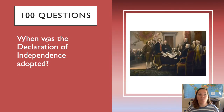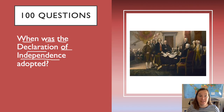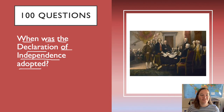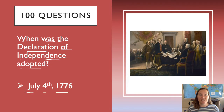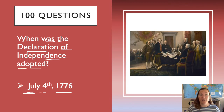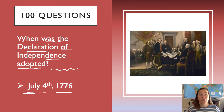When was the Declaration of Independence adopted? July 4th, 1776. If you hear the word 'adopted,' that means the day it was signed, so you want to include the year 1776.